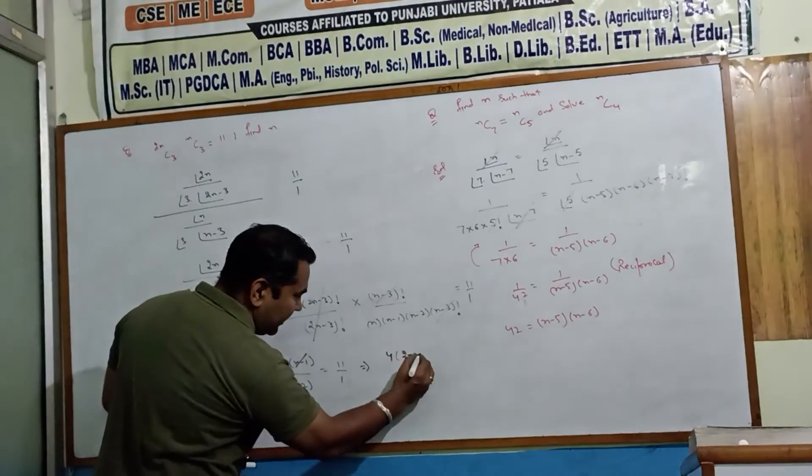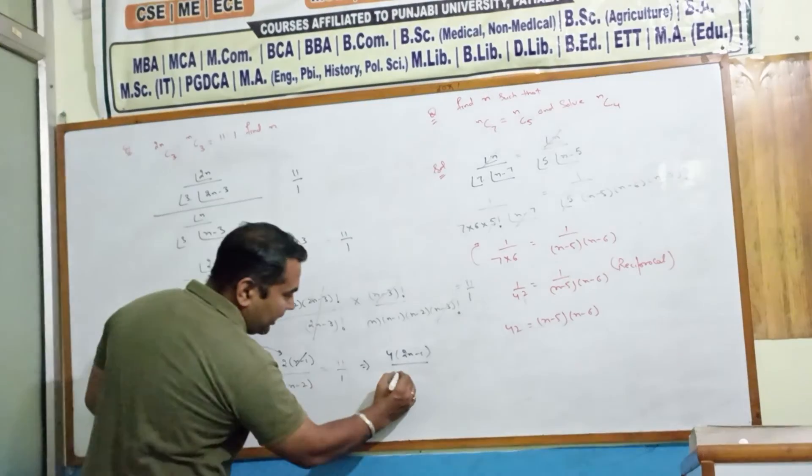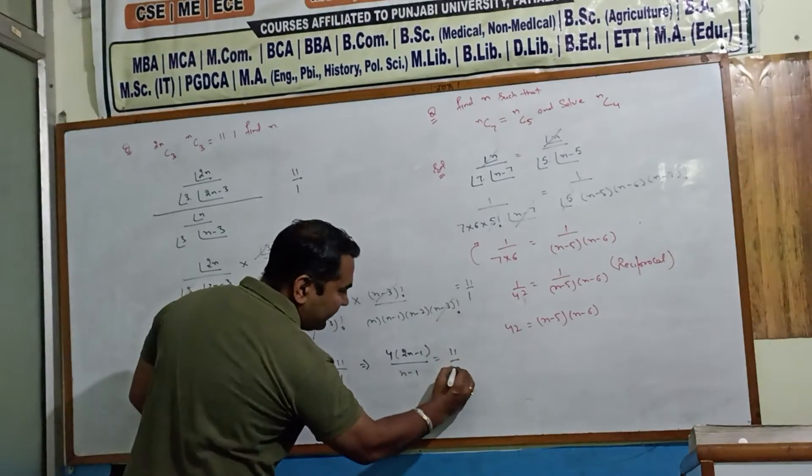So 2N minus 1 over N minus 1 equals to 11 by 1. Now,